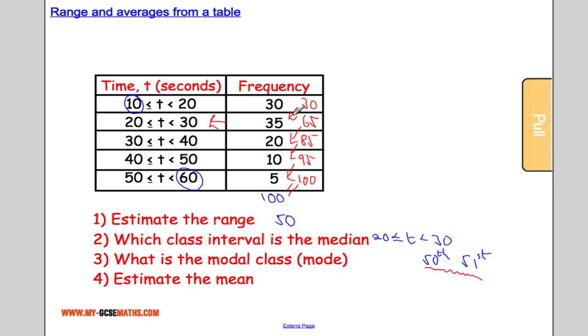The modal class is the one that has the highest frequency. Again, it's the same. In this case, it's 20 less than or equal to t less than 30.